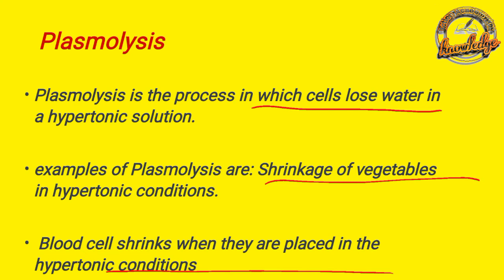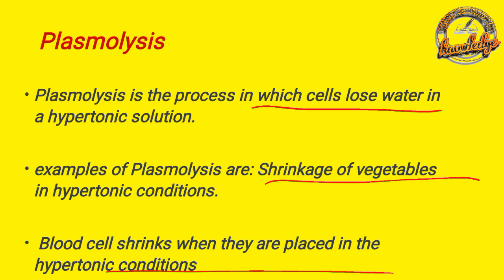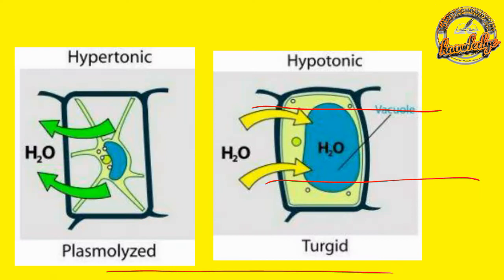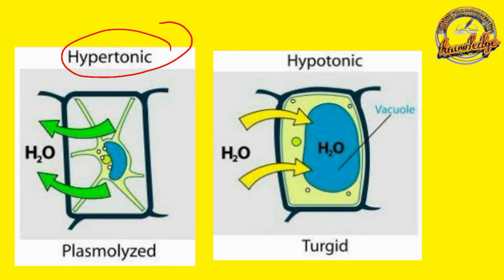Plasmolysis is a condition in hypertonic solution. Water is shrunken. The hypertonic condition is a condition where water is lost, and the cell undergoes plasmolysis or shrinking. It is a plastic plasmolysis.